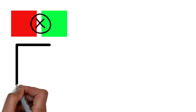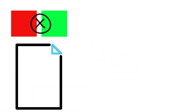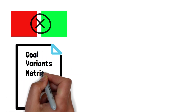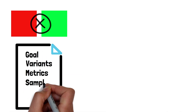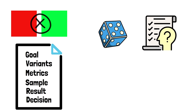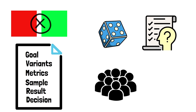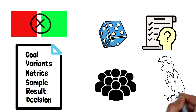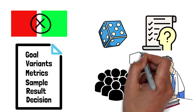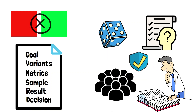Document your test in a simple one-pager: goal, variance, metrics, sample, result, decision. Clear hypothesis, correct randomization, adequate sample, and sober reading — that's trustworthy experimentation.